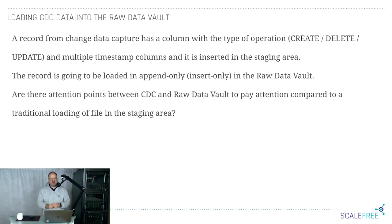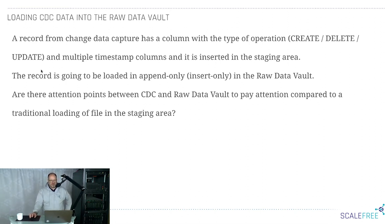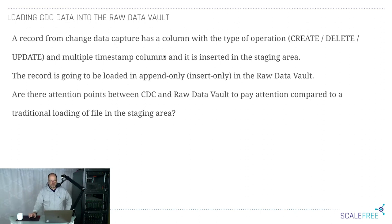You get records via CDC and you have a column with the type of operation — create, delete, update — and multiple timestamp columns like CDC timestamp change, change state, or change timestamp, something like that. It's all in the staging area. I assume you get the whole batch — the whole CDC package arriving in the staging area. There's no need to only capture the latest record from the CDC batch. We can process the whole batch into the raw data vault. The question is: are there any attention points between CDC and raw data vault compared to traditional loading of files in the staging area?